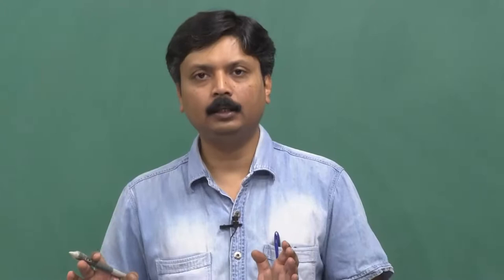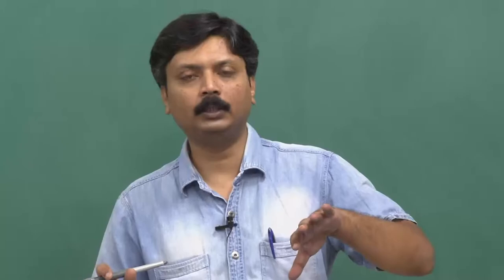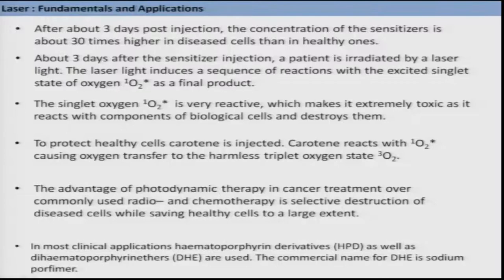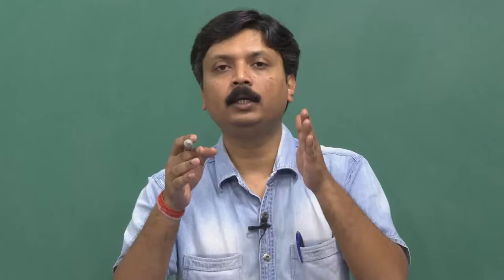Initially the sensitizer concentration is pretty much the same in healthy tissues as well as affected tissues, but after a long period of time — like 2 to 3 days — the sensitizer leaves the healthy tissues. In cancerous cells, however, the sensitizer remains accumulated for 7 to 10 days. After 3 days, when healthy tissues have no more sensitizer, one can have nearly 30 times higher concentration of sensitizers in the affected cells. At that time, the patient is irradiated with laser light, which induces a sequence of reactions with excited singlet oxygen as the final product, and the singlet oxygen kills the biological cells.